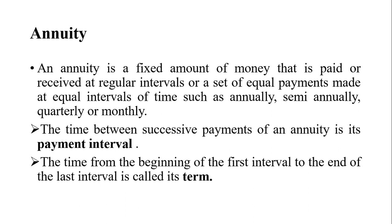There are two important terms. First is payment interval and another is term. The time between successive payments of an annuity is its payment interval. The time from the beginning of the first interval to the end of the last interval is called its term.